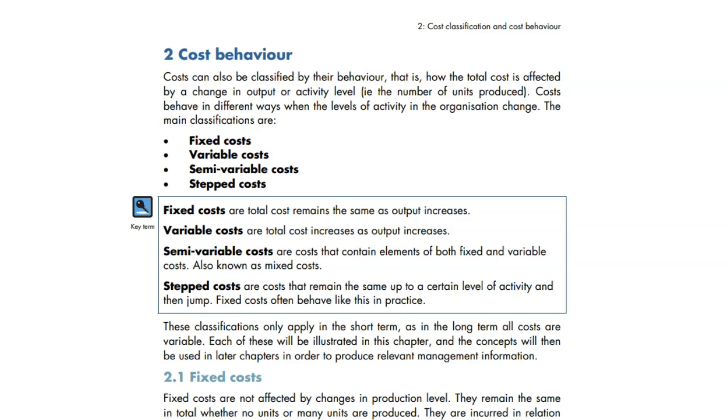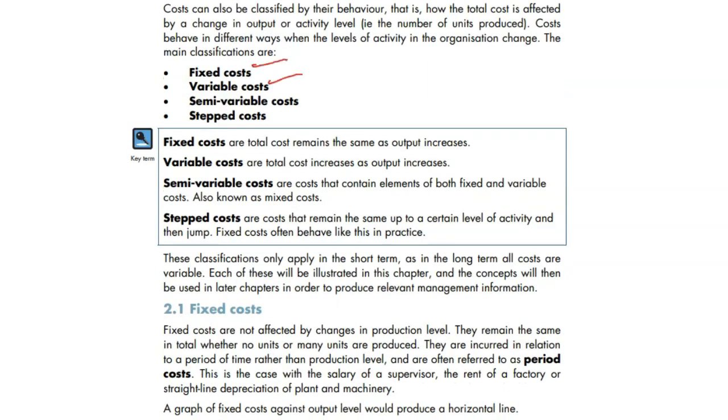Welcome everybody to the next video about cost behavior - how does cost change based on the level of activity, which could be units or production. There are four types: fixed cost, variable cost, semi-variable cost, and step cost.